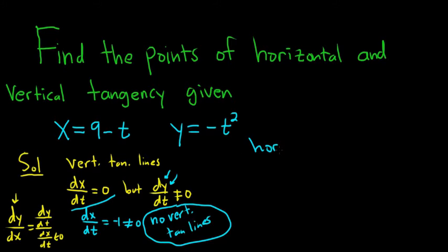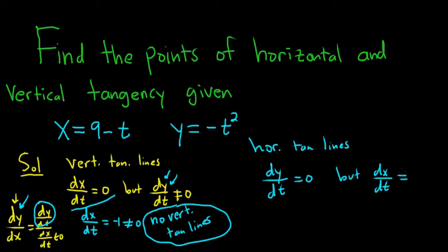Let's look for horizontal tangent lines. So for horizontal tangent lines, it's different. Horizontal lines have a slope of 0. So if you look at the formula for dy/dx, you would want the top part to be 0. So in this case, you want dy/dt to be 0, but dx/dt to not be 0. That's the condition for horizontal tangent lines.